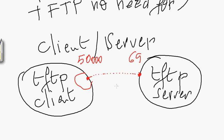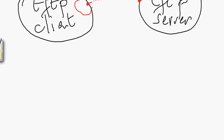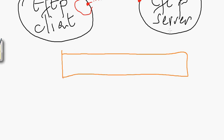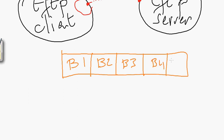Since TFTP uses the UDP transport layer, and UDP is not reliable, the mechanism used by TFTP is that the data is divided into small blocks. Assume we have a large chunk of data — the TFTP server prepares this file as data and divides it into smaller blocks: block one, block two, block three, block four, block five.